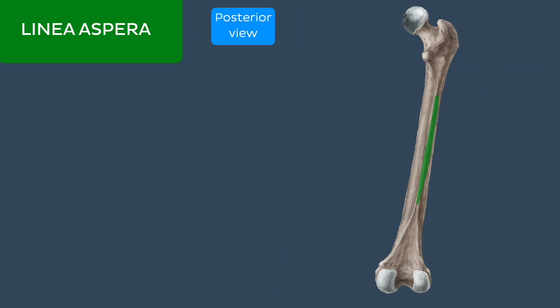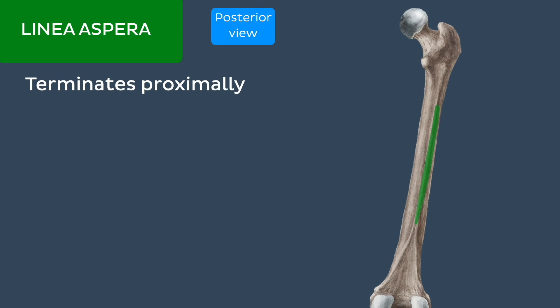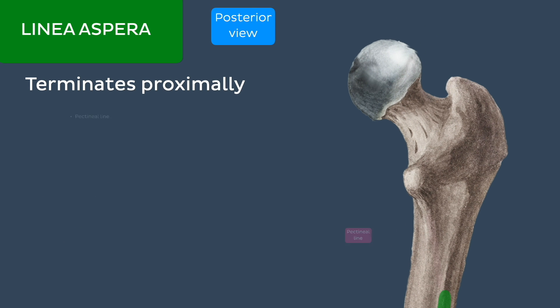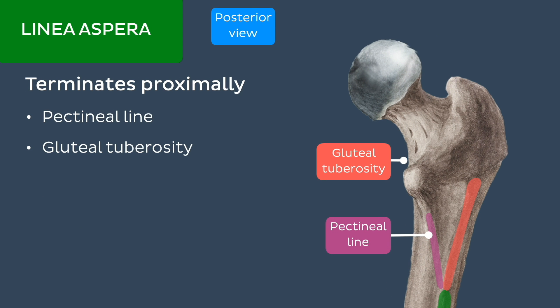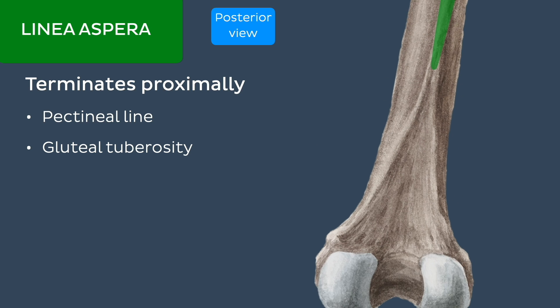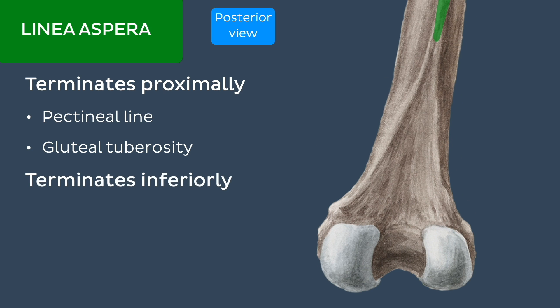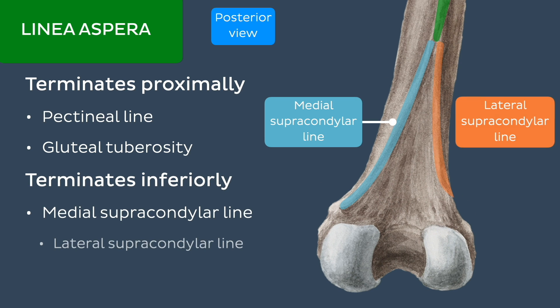The linea aspera terminates proximally by merging with the pectineal line and gluteal tuberosity, and inferiorly as it divides into the medial and lateral supracondylar lines, all of which we will look at now.